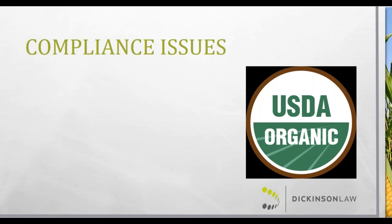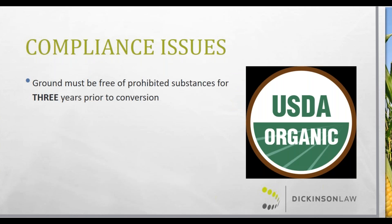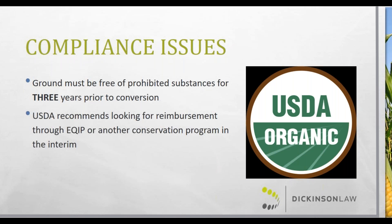There are compliance issues producers may not be aware of when they first consider switching to organic. The first and most significant is that the land must lay fallow for three years — though alternative crops can be grown in that interim. What they cannot do is grow conventional crops on ground intended for organic, because the ground must be free of prohibited substances: all standard herbicides, pesticides, fertilizer, and GMO seeds. USDA has recommendations for cash flowing during that interim period — operators could plant organic-qualifying crops and treat the operation as organic during the three years, but they won't be able to get certification, so they'll only sell crops for conventional prices.